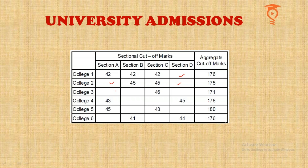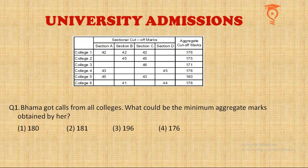Many people also get confused thinking there were different exams for each college. It works like CAT — you write one exam, and then the IIMs and hundreds of other institutes take that single score. So that one unique score determines your calls from all six colleges. Each question in this set is very different from the others; it is quite possible to get one question correct and the other two wrong.